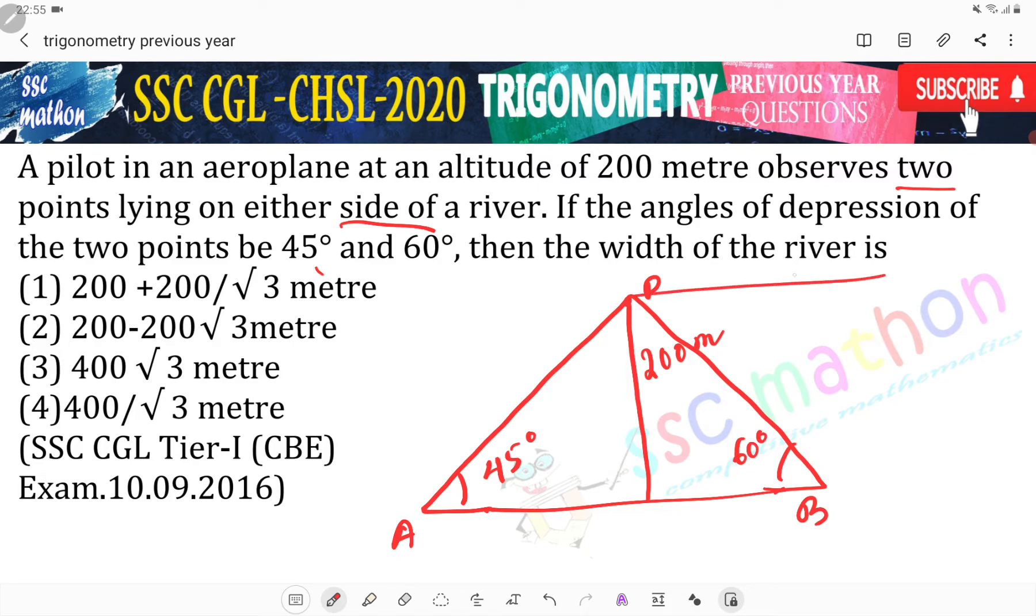What sir? Does the angle happen here? No sir. The angle happens here. So making it parallel, we have to take 60 degree again. That's why quickly I wrote it there, okay? Angle of depression means this angle. These two straight lines are parallel - this line and this line.